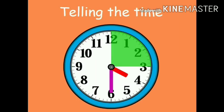When the big hand moves from 12 to 3, it is quarter past the hour. This is because the big hand has moved a quarter of the way around the clock face.